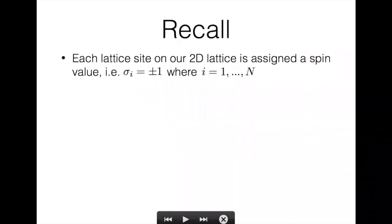I first want us to recall that each lattice site on our 2D lattice is assigned a spin value, i.e. each sigma i is assigned plus one for an upspin or minus one for a downspin where i ranges from one to n.